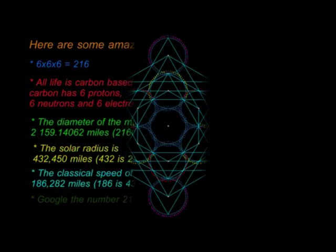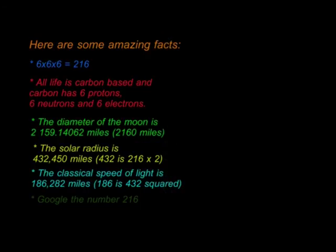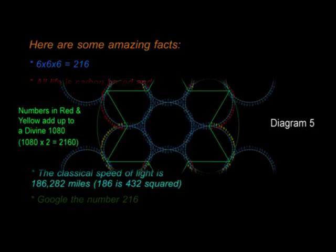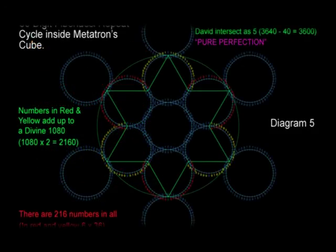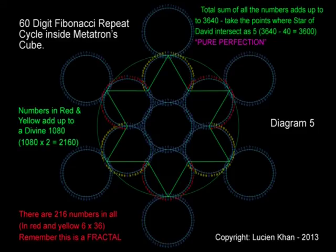This is the key to the messianic age. Once we accept God and abandon nihilism and chaos, we can open the gates to heaven. I have proved mathematically that the universe is an intelligent construct. The fact that the Fibonacci 60 digit repeat cycle fits so perfectly into Metatron's cube is not a random coincidence.